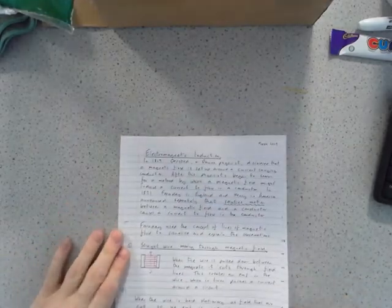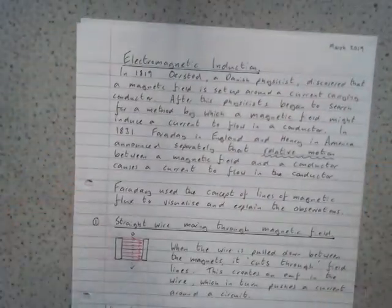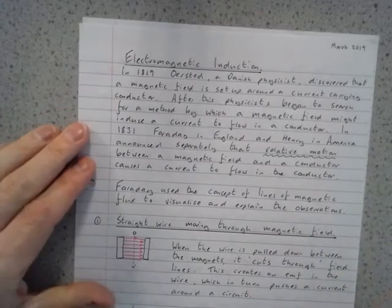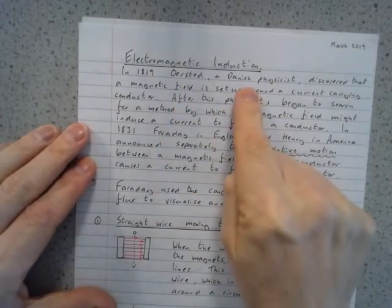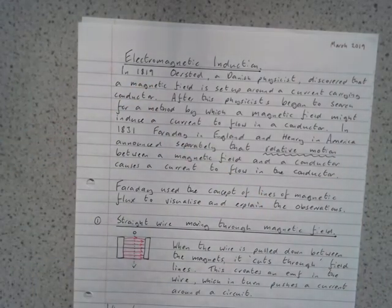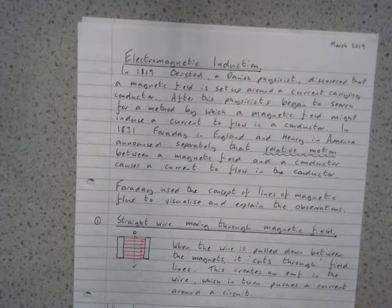There are some notes to go with this which I'm going to attempt to copy and send to you. Oersted, the Danish physicist, in round about 1819 he discovered electromagnetism, in other words that a magnetic field is set up when you have a current carrying conductor. So that's this idea of current in a conductor giving you magnetism.